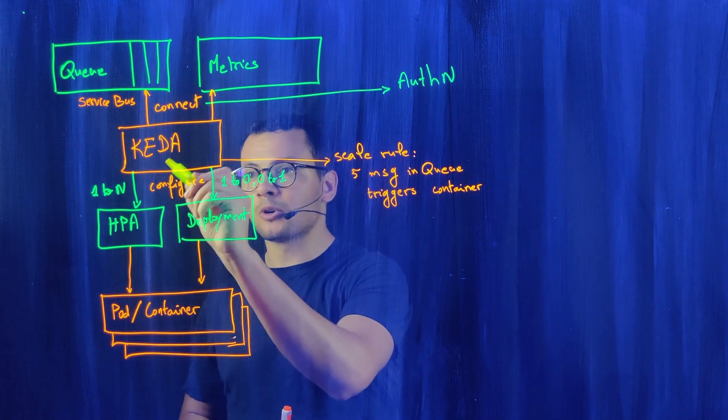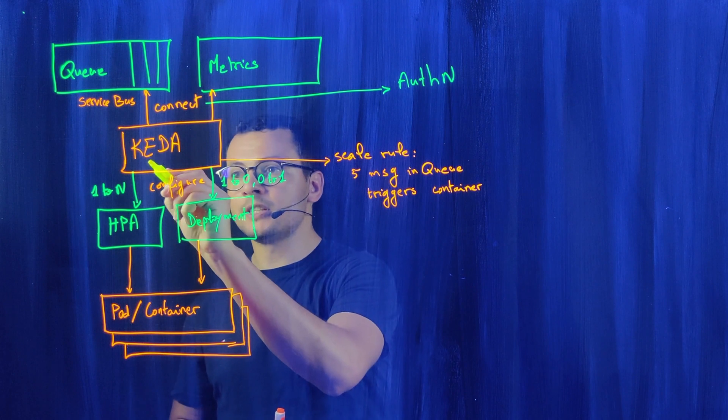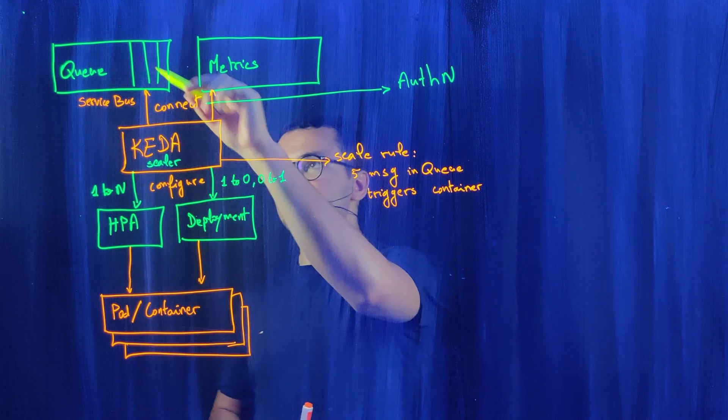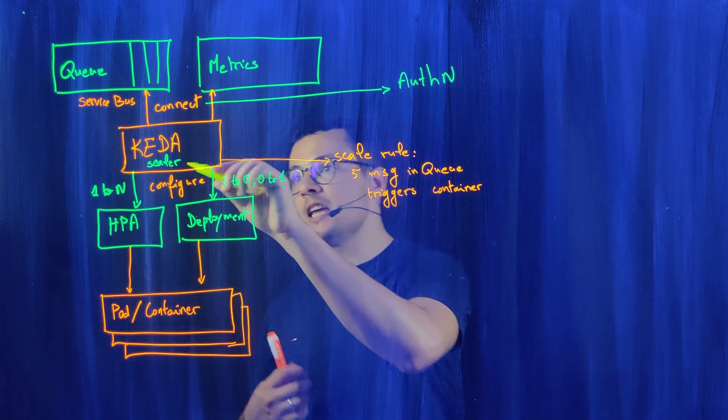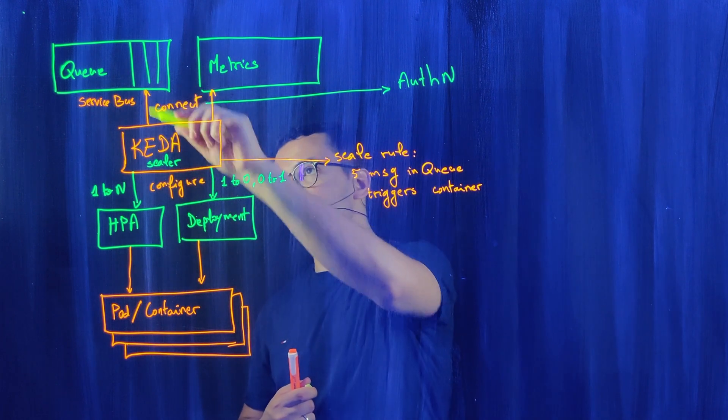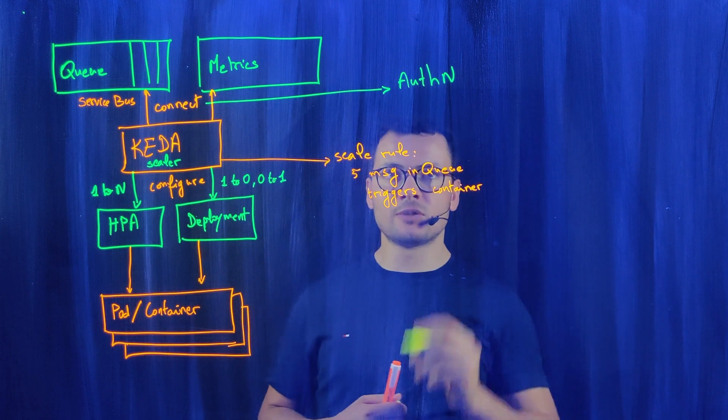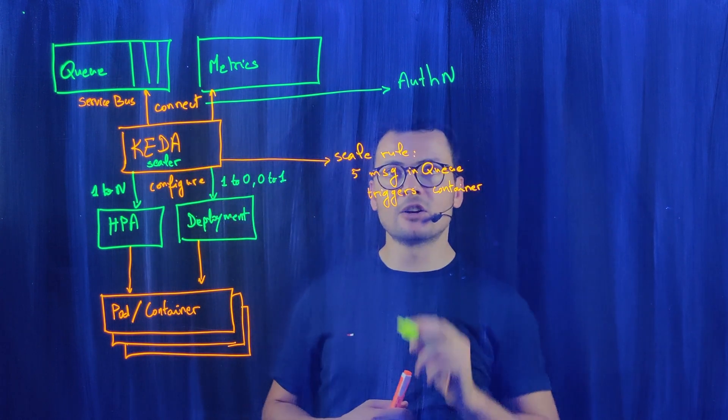KEDA has multiple components. One of them is the scalers. For each external system like Azure Service Bus, we have a specific scaler that can be used to authenticate to Azure Service Bus. And the authentication depends on that scaler.